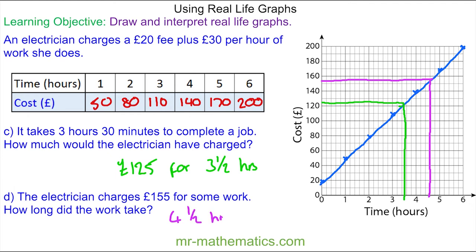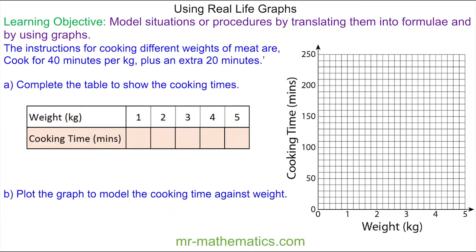Okay, let's move on. The instructions for cooking different weights of meat are: cook for 40 minutes per kilogram plus an extra 20 minutes.